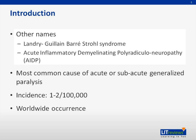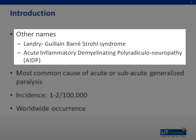GBS is also known as Landry-Guillain-Barré syndrome, an acute inflammatory demyelinating polyneuropathy, or AIDP. In the year 1916, Guillain and Barré first described the clinical and laboratory features of the disease. Earlier in 1859, Landry had reported similar clinical findings in his patients.